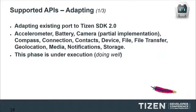The first phase is an adaptation phase of the existing port to Tizen SDK 2.0, supporting every API from the previous port: accelerometer, camera with partial implementation only, compass, connection, contacts, device, file and file transfer, geolocation, media, notification, and storage. For geolocation, storage, and media, it is straightforward because they use W3C APIs directly supported by both Cordova and Tizen — so there is nothing to do.